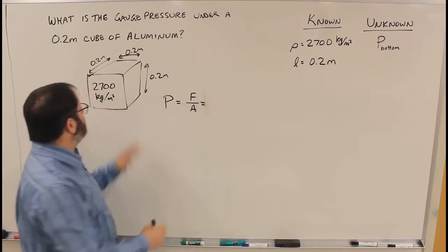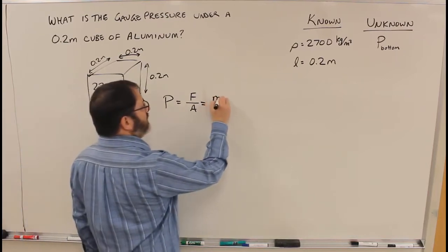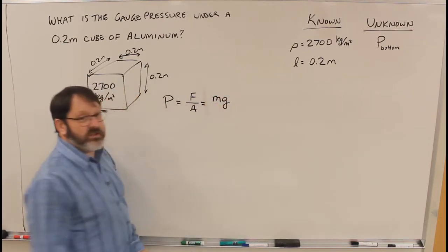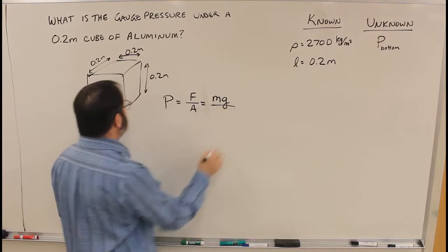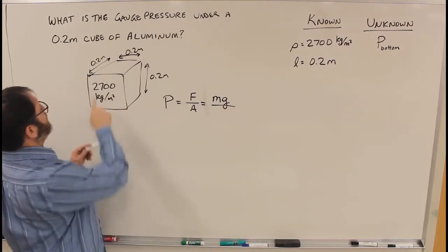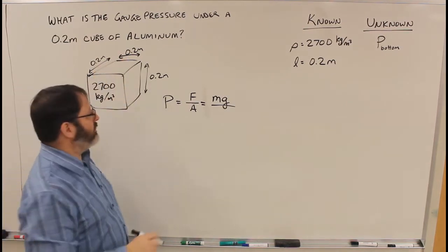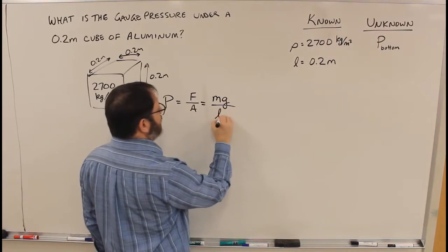So the force is created by the force of gravity acting on it, so that would be the mass of the block times G, and then divided by the area of the bottom. Well, the area of the bottom, that's the same as the top here, so it's a square, 0.2 meters by 0.2 meters, so it's that length squared.